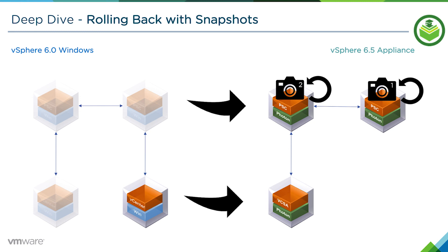So we haven't had to roll back the entire environment. We've just had to go back one snapshot level, troubleshoot the issue, and start again from that point in time. It saves a lot of energy and time. That's how you can handle migration failures by using snapshots, ensuring you don't have to roll back an entire environment if you have a migration failure of one node out of many. That concludes this video on rolling back vCenter Server migration failures.